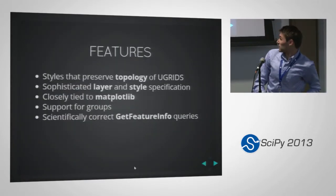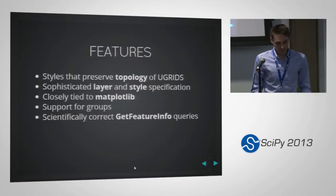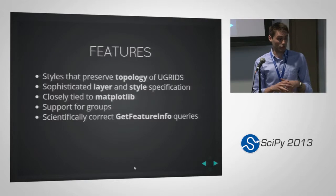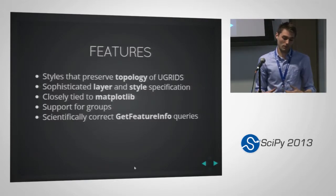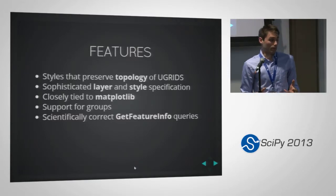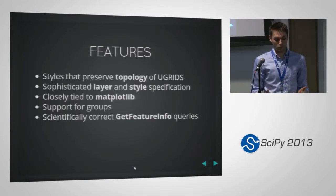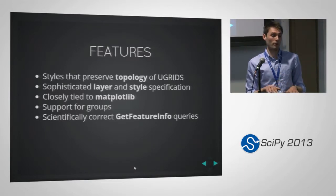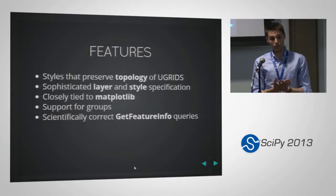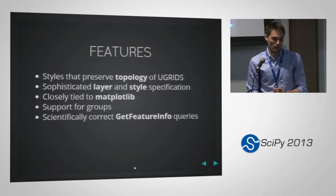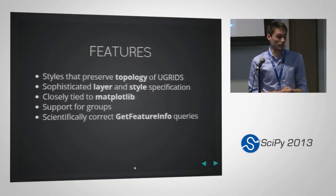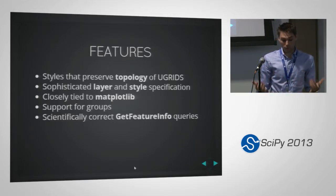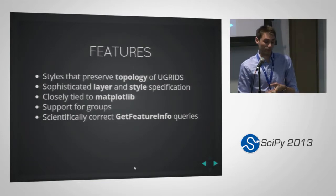These are some features of SciWMS. We have styles that preserve the topology and triangular nature of unstructured meshes. We have sophisticated layer and style specifications, including layer math and layer conversion — for example, adding sea surface height to depth for total water depth. It's closely tied to Matplotlib, which has done all the hard work for us. We also support logical groupings of layers.